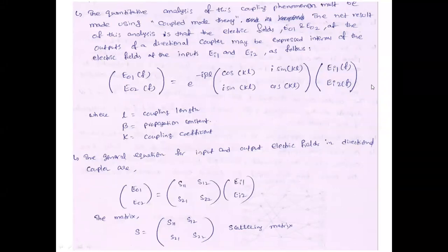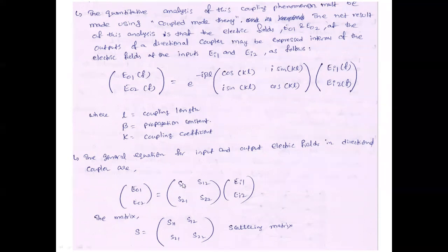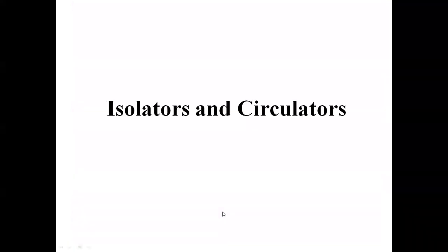These terms cos(KL) and j·sin(KL) come from the scattering matrix of the directional coupler. From the scattering matrix: [E_O1, E_O2] = [S11, S12; S21, S22] × [E_I1, E_I2], where S11, S12, S21, and S22 are the scattering matrix parameters. These are the equations for the directional coupler.